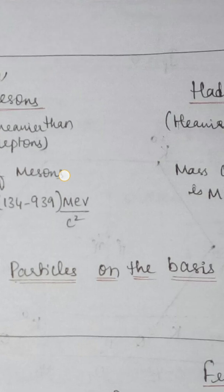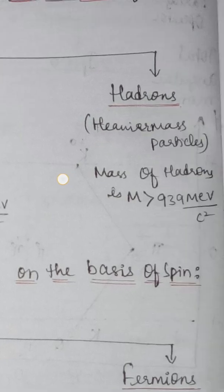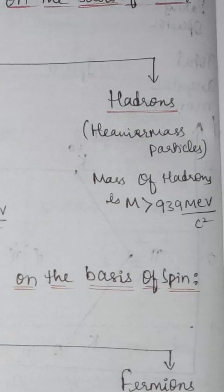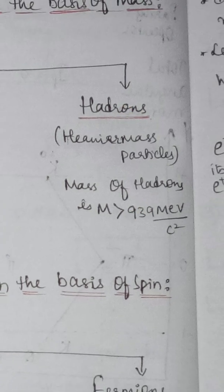The third category is hadrons. Hadrons are heavier mass particles. The mass of the hadrons is greater than 931 million electron volts per c-squared. Hadrons are the heaviest among the three groups.